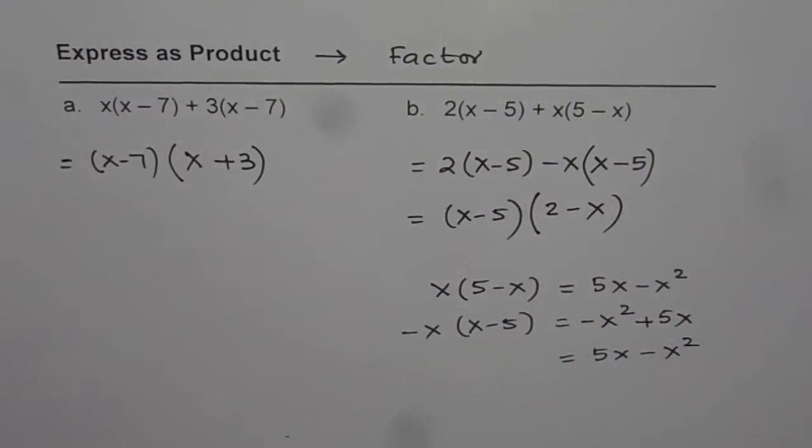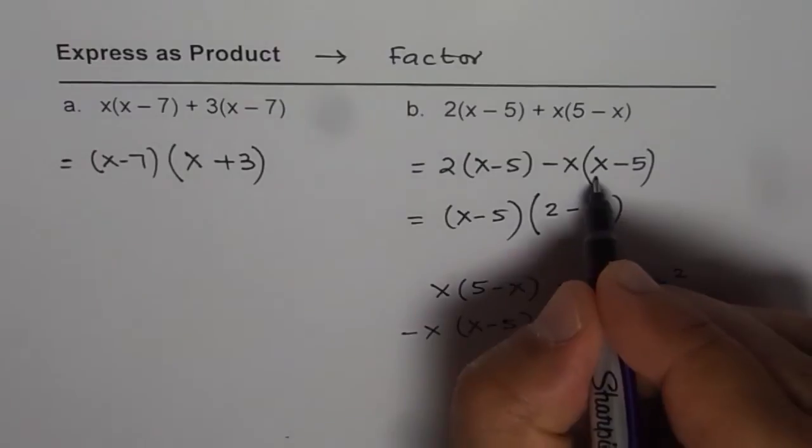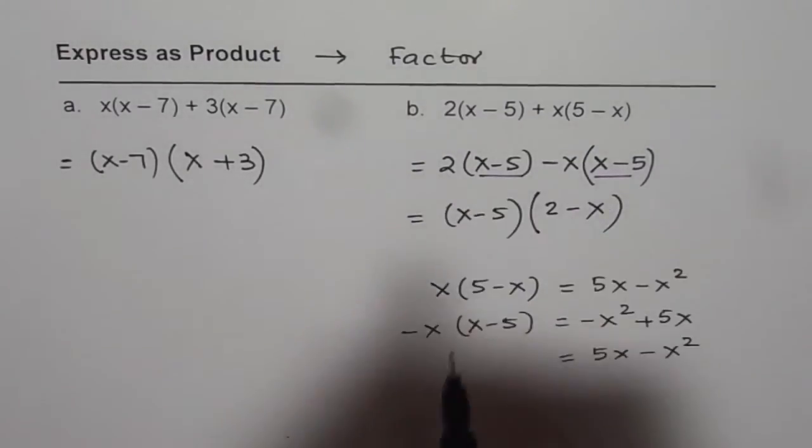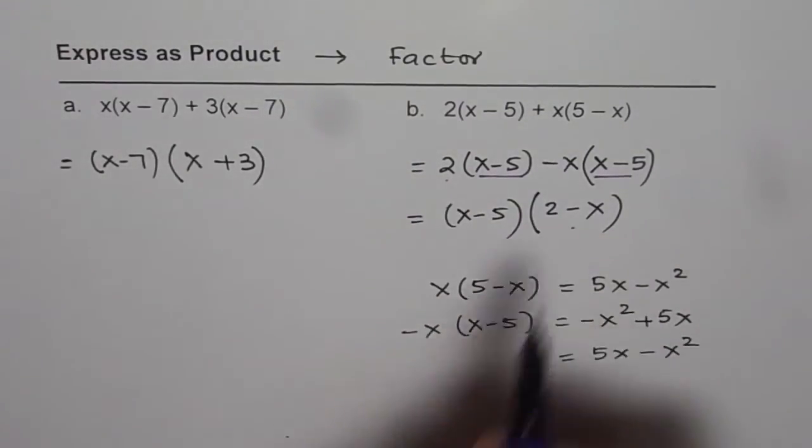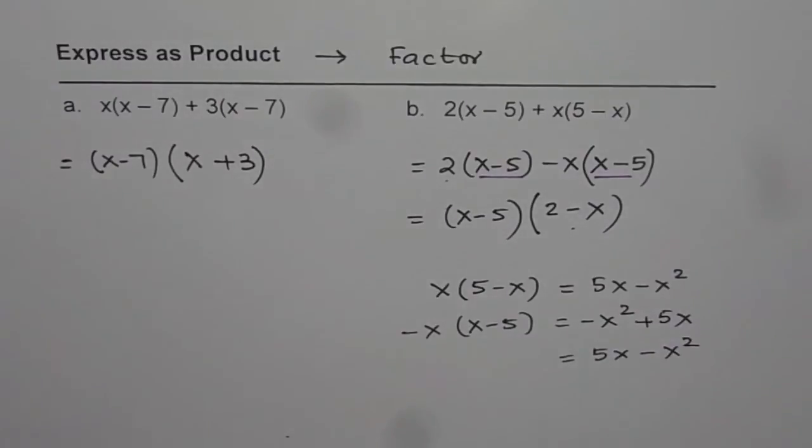I hope these steps are clear. So we factored out x minus 5. We are left with 2 and minus x. So that is how you can express sum or difference of a polynomial expression as a product of polynomials.